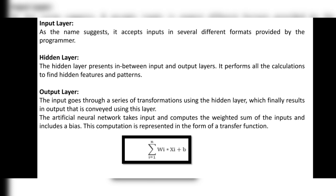The input layer accepts inputs in several different formats provided by the program. The hidden layer is present between the input and output layers and performs all the calculations to find hidden features and patterns. The output layer is the result of the input going through a series of transformations using the hidden layer. The output is calculated using a transfer function applied to the weights.